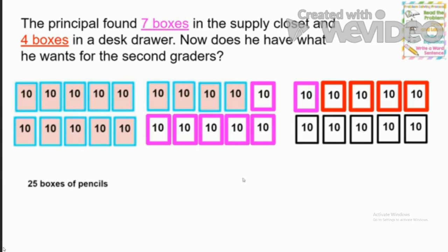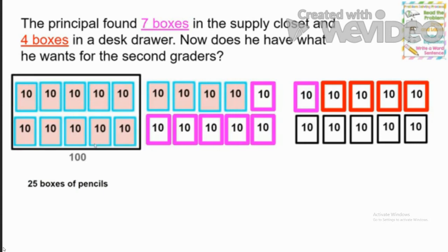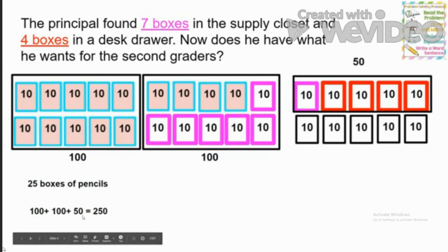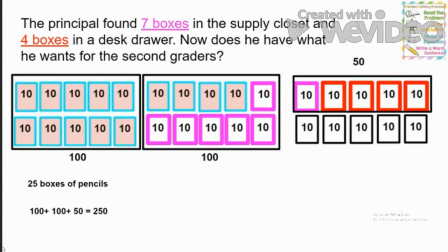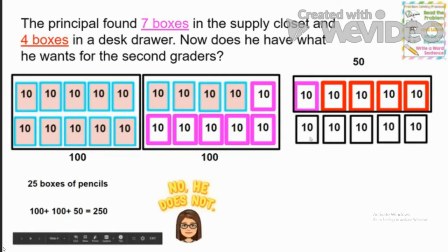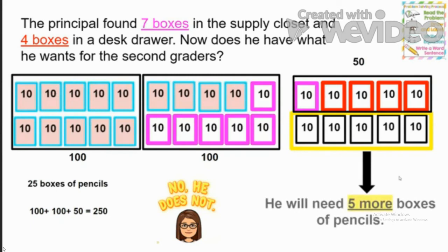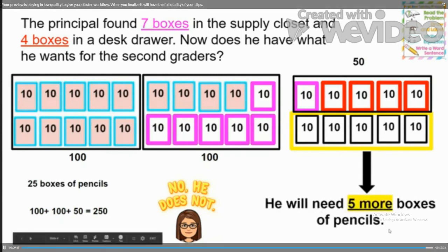How many total boxes does he have now? Let's count using groups of 10: 10, 20, 21, 22, 23, 24, 25. He now has 25 boxes of pencils, and each box had 10 pencils. This group is 100, and here's another 100, and our 5 tens is worth 50. So 100 plus 100 plus 50 equals 250. He only has 250 pencils — the principal needed 300 — so he does not have enough. He still needs 5 more boxes of pencils.